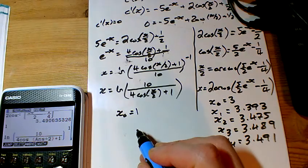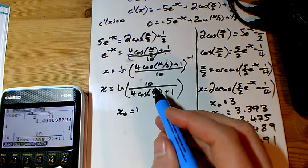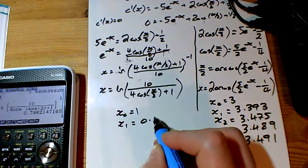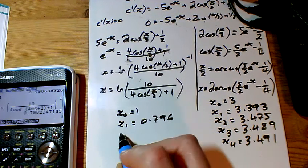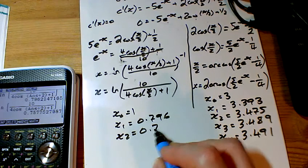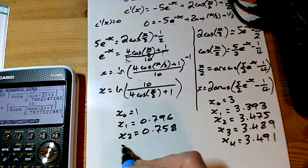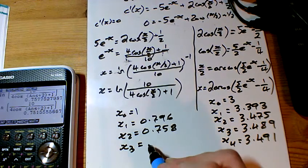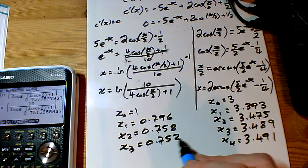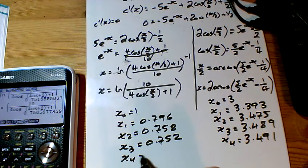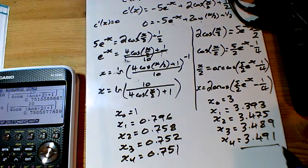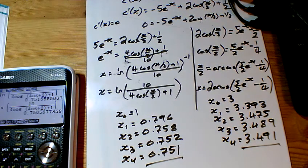And on the other side, it says start at 1 and using the ln version. So I'm getting x1 of 0.796, x2 of 0.758. My third guess is 0.7512. And my fourth guess is 0.751. So they're going to the two different stationary points.